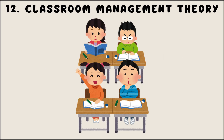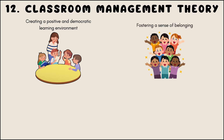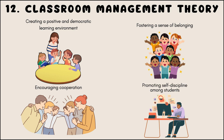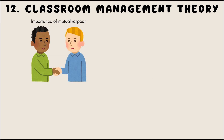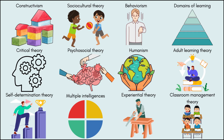Dreikurs' classroom management theory focuses on creating a positive and democratic learning environment by fostering a sense of belonging, encouraging cooperation, and promoting self-discipline among students. This theory emphasizes the importance of mutual respect, clear boundaries, and logical consequences in managing classroom behavior and promoting student engagement and responsibility.